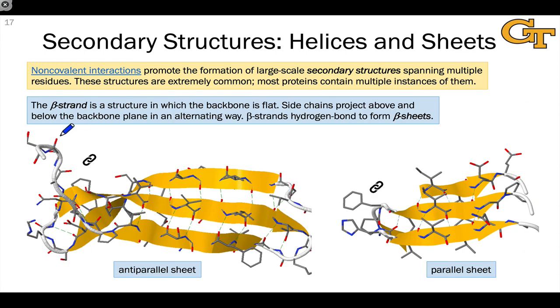The second type of important secondary structure is the beta strand or beta sheet. In a single beta strand, the backbone assumes a flat position with side chains projecting above and below the plane of the backbone. Because of the flat structure of the backbone, strands can hydrogen bond with each other to form multi-strand sheets.